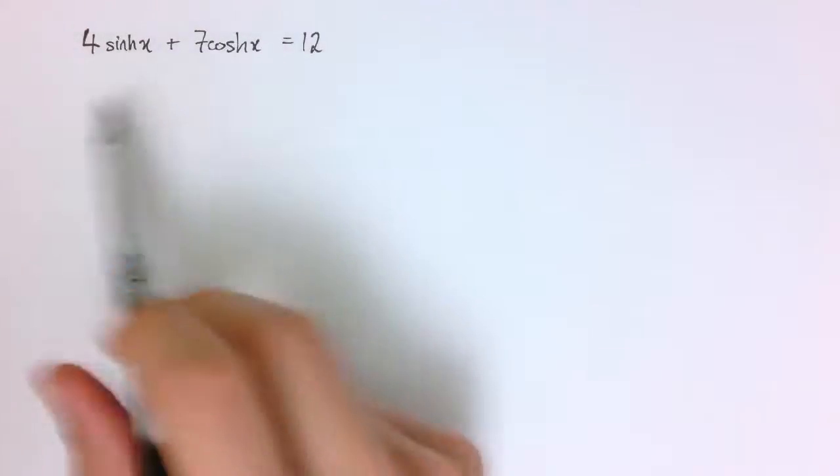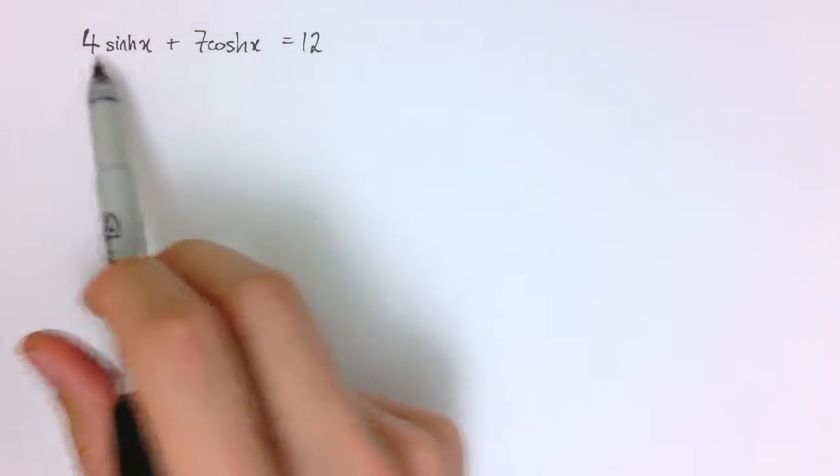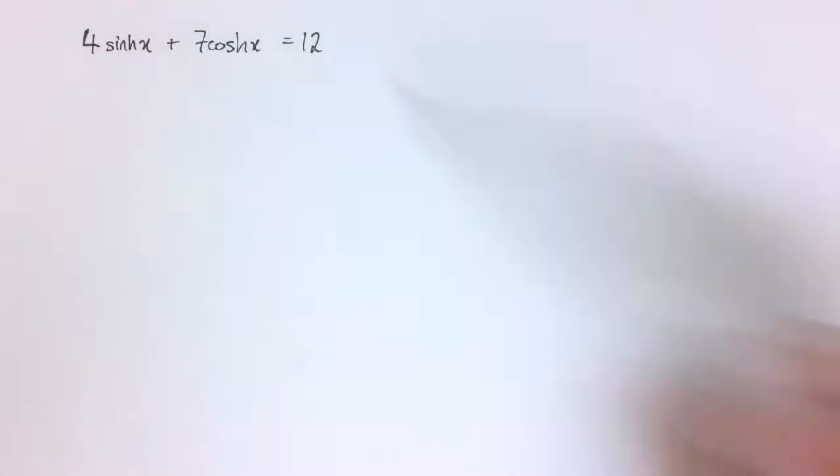If we put an equation like this which is just linear in sinh and cosh, so it's just 4sinh(x) plus 7cosh(x) equals 12 and no sort of squares or cubes or anything like that.